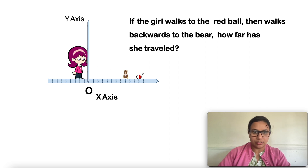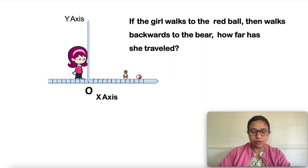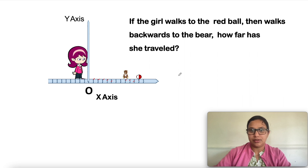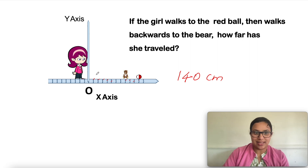Another example: the girl walks to the red ball, that is from O to the red ball, and then walks backward to the bear. How far has she traveled? If each unit is 1 centimeter, counting from O to the red ball: 1, 2, 3, 4, 5, 6, 7, 8, 9, 10, 11 — that is 110 centimeters. Then from the red ball to the bear: 1, 2, 3 — that is 30 centimeters. So the total distance covered by her is 140 centimeters.